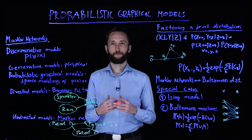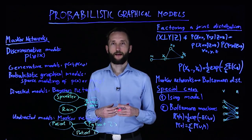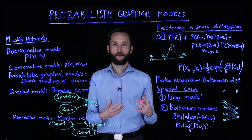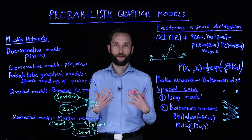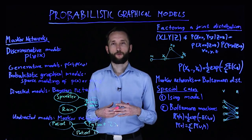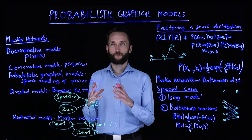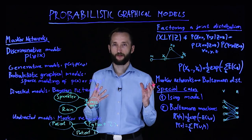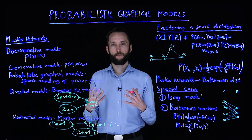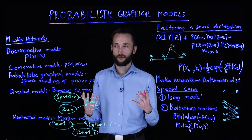Deep learning excels at supervised learning and has also been making rapid advances in other paradigms of machine learning, but there are tasks that remain intrinsically difficult to tackle by this paradigm. There are a couple of problems which are a more natural fit to other models, for instance probabilistic graphical models. These can be trained and used efficiently by using quantum resources.